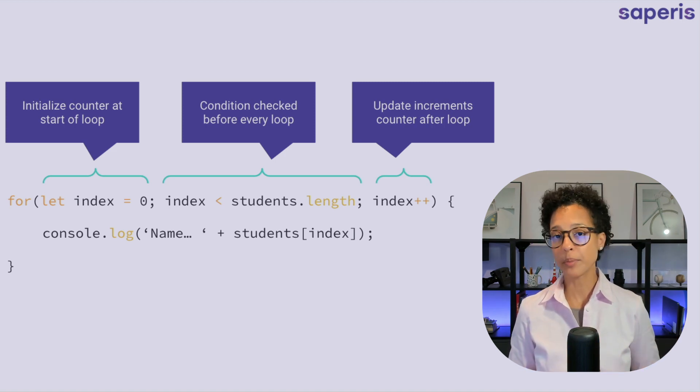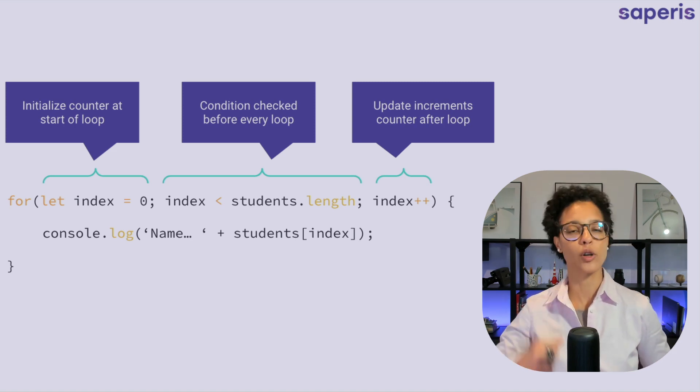A lot of other people like to abbreviate that and use i but it does exactly the same thing. Then we have our condition which is checked before every loop runs. So here we're checking for as long as index is lesser than students dot length, run the loop.